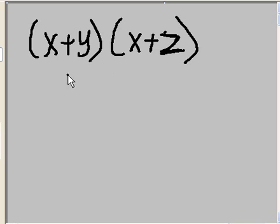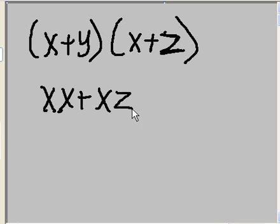First we multiply it out. We get x times x becomes xx, x times z becomes xz, then y times x becomes xy, then y times z becomes yz.